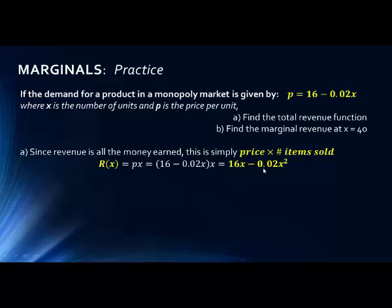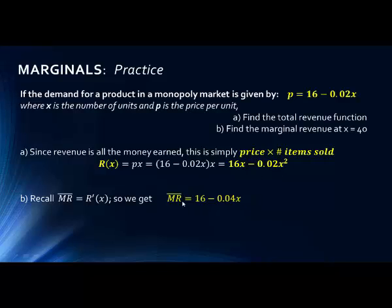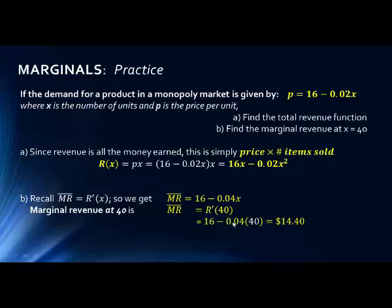Recall that marginal revenue equals the derivative of the revenue function. Taking the derivative of R(X) = 16X − 0.02X², we get R′(X) = 16 − 0.04X. Plugging in X = 40, we get 16 − 0.04(40) = $14.40.